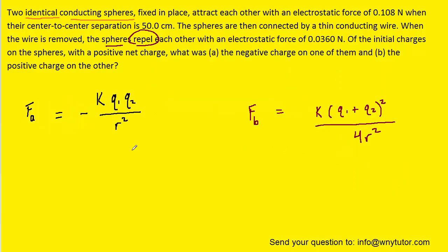Now we've cleaned up the workspace a bit. We're going to take the fa equation and try to isolate the product q1 times q2. So to do that, we would first multiply both sides of the equation by r squared. And then, of course, divide both sides of the equation by negative k so that it cancels out on the right side.